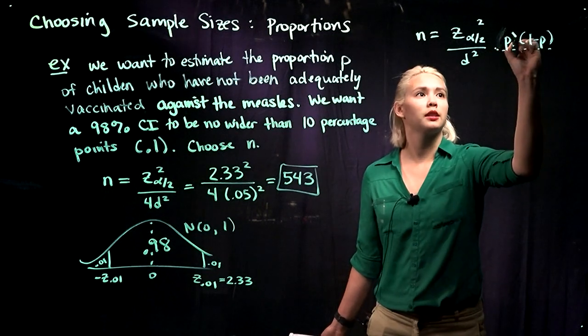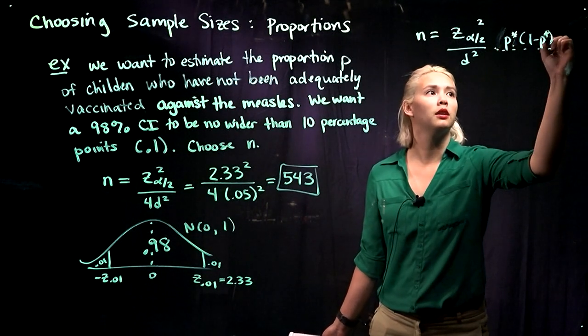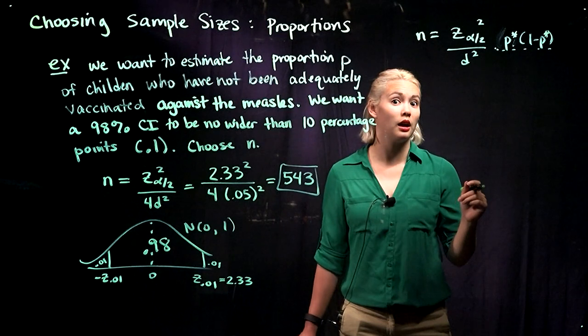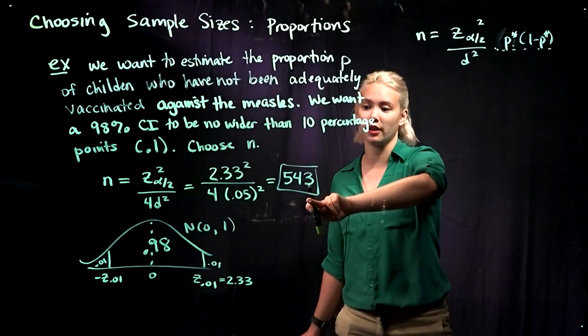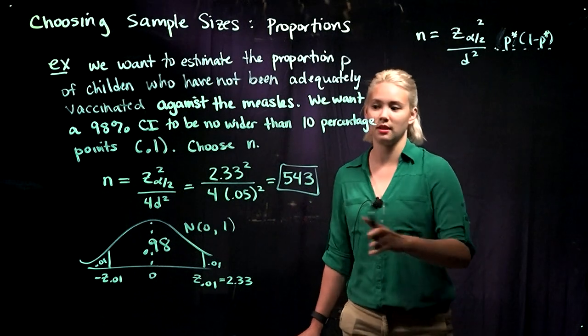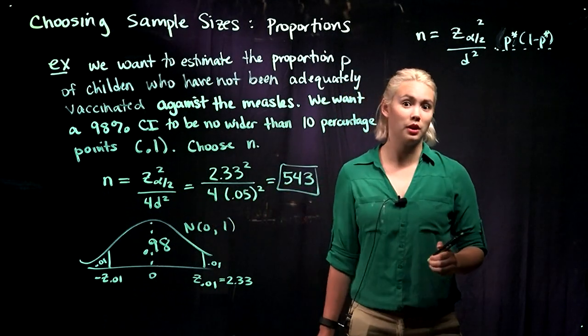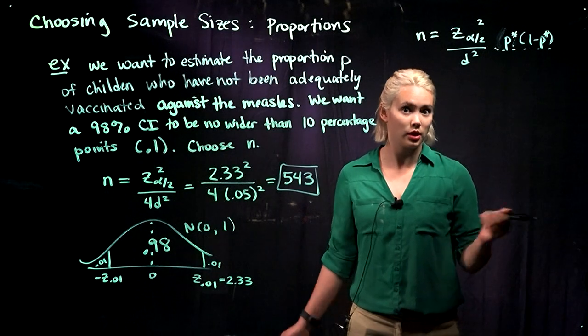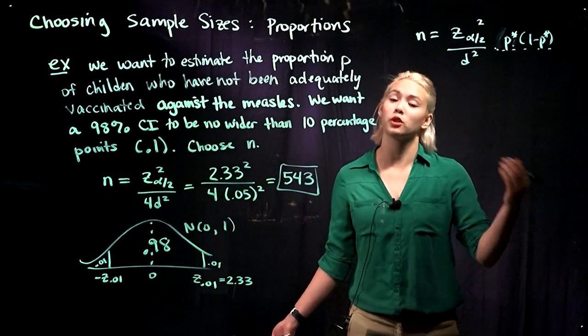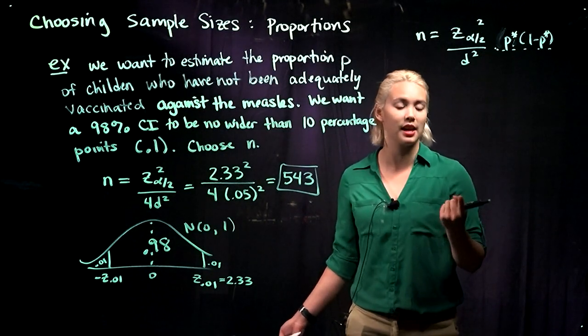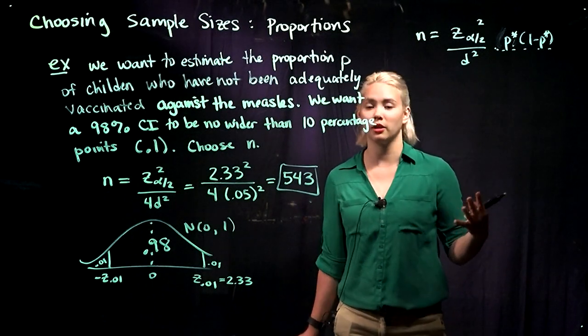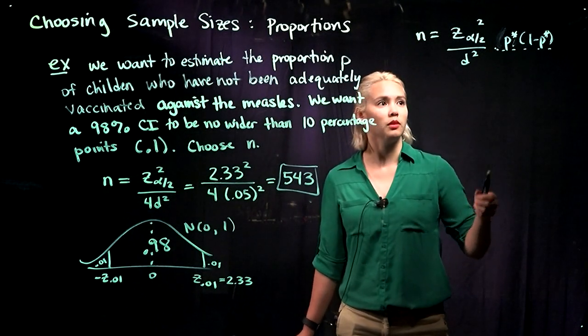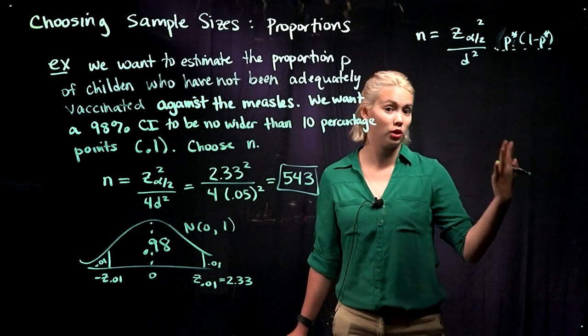If we call our decent guess p star, then we can get a new sample size. And that sample size will definitely be smaller than the sample size under our worst case scenario of using p of .5. This is useful because obviously if we have a smaller sample size, it's going to take less time, it's going to cost less money, it'll just make things easier. So if we have some good guess, then we should go ahead and use that.